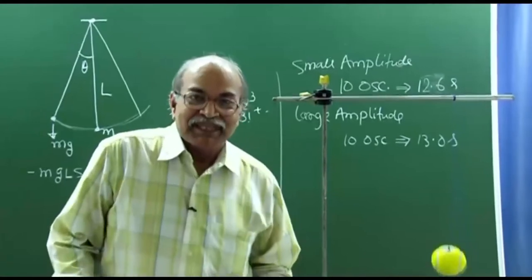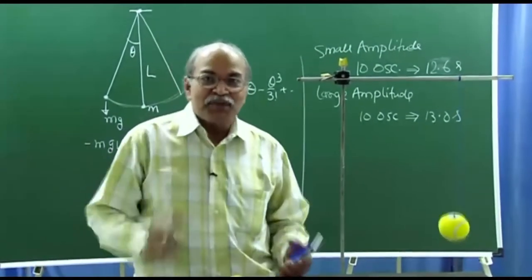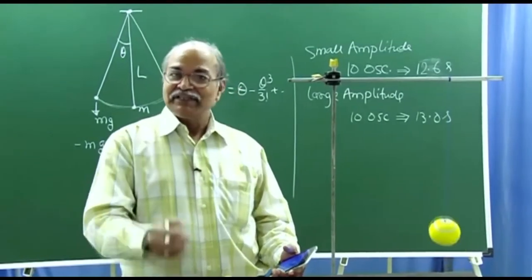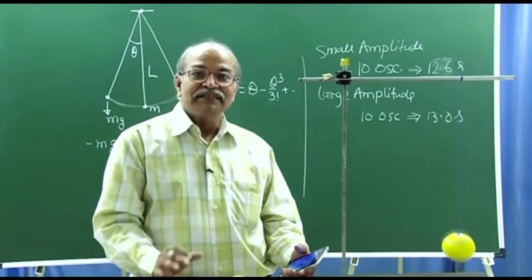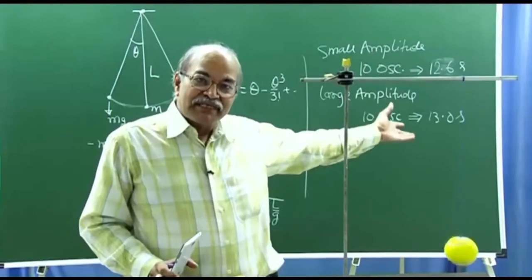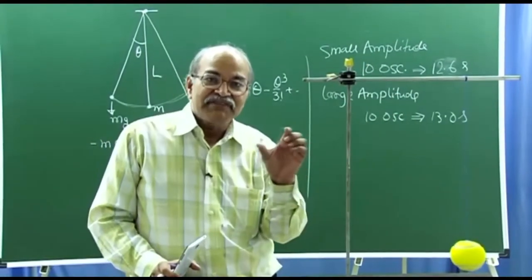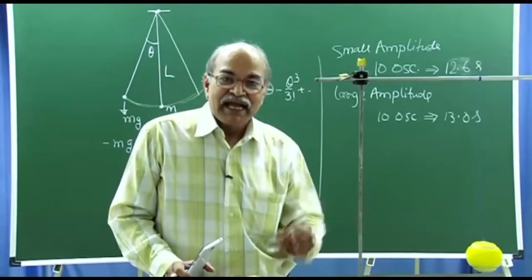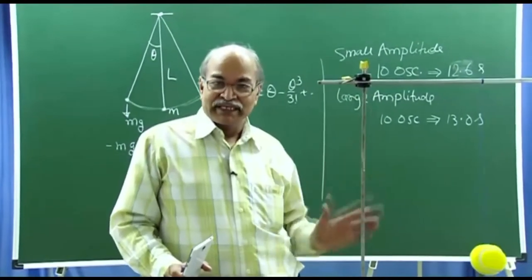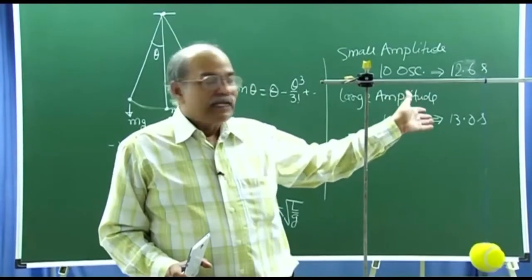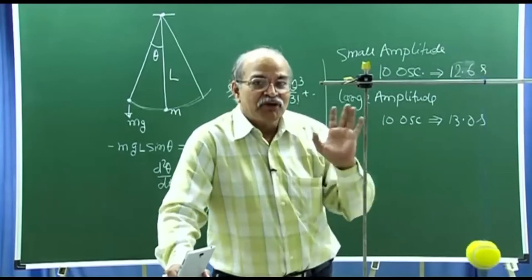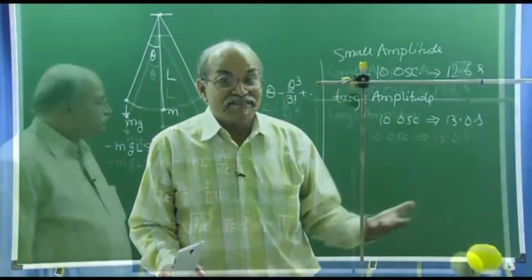But you don't have to believe this data because starting the stopwatch, stopping the stopwatch, right at the time when this ball is at the extreme, that synchronization, all these things may involve errors. And those errors are typically of the order of 0.1, 0.2 seconds. So essentially you should do several measurements, 3, 4 measurements at least, and see if there is a variation. And there will be variation if you do the experiment, and then take the average value. If the variation is very large, then you have to improve your experimental skills. But if the variation is within 0.1, 0.2 seconds, then you can take the average value of 3, 4, 5 readings. And then you can get what is the time period for small amplitudes, what is the time period for larger amplitudes.